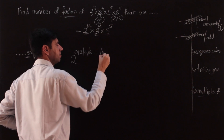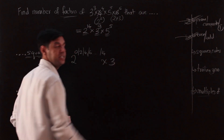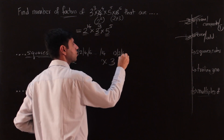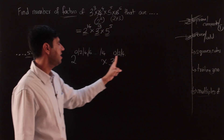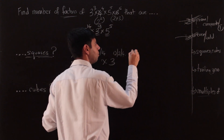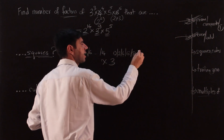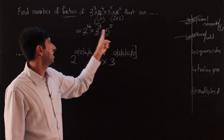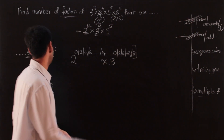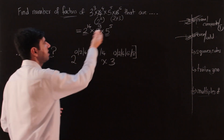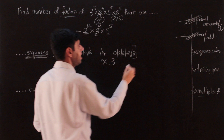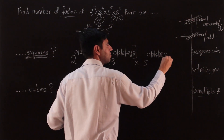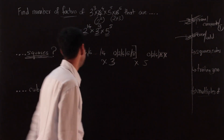The index of the first prime can go up to 14. Similarly, the index of 3 needs to be a multiple of 2 — 0, 2, 4, and so on — but it cannot go beyond 9. Since 9 is not even, the maximum is 8. So 3 raised to 10 would be a perfect square but would no longer be a factor. For 5, the powers 5⁰ and 5² and 5⁴ work, but 5⁶ and beyond do not, since the power can only go from 0 to 5.